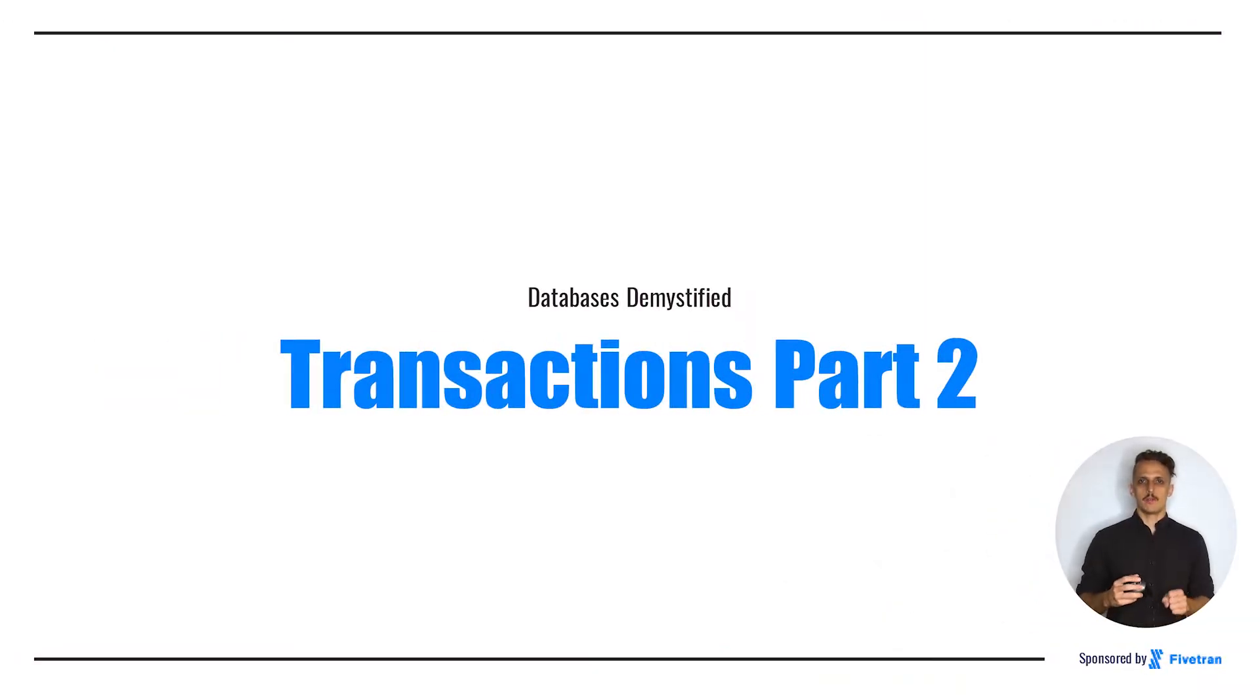Today is the second part of a two-part series on transactions. If you haven't watched Transactions Part 1, definitely go back and watch that first. Otherwise, you'll be missing some important context and vocabulary for this lesson. We're going to be continuing our discussion of transactions by covering two very important topics for understanding database performance: locks and isolation levels.